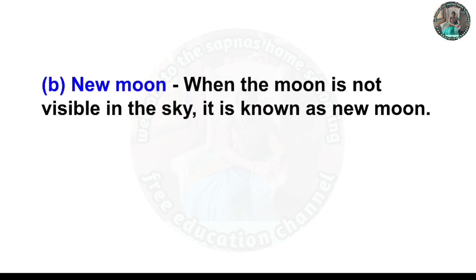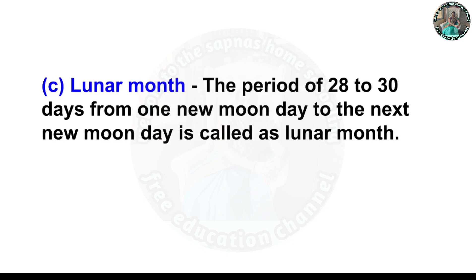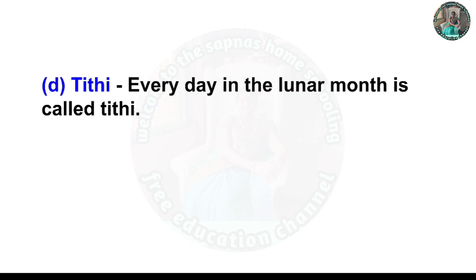B) New Moon: When the moon is not visible in the sky, it is known as new moon. C) Lunar Month: The period of 28 to 30 days from one new moon day to the next new moon day is called a lunar month. D) Tithi: Every day in the lunar month is called a tithi.